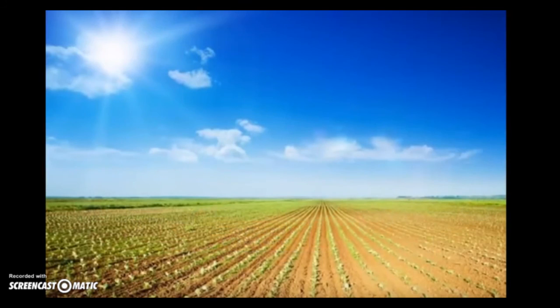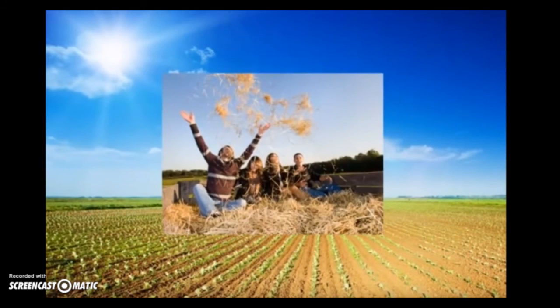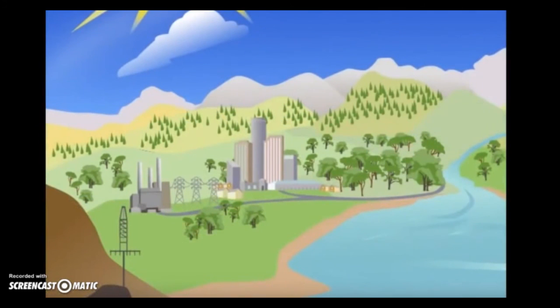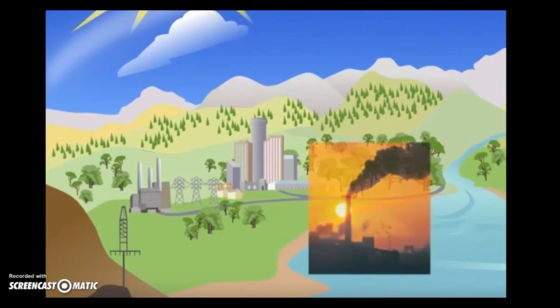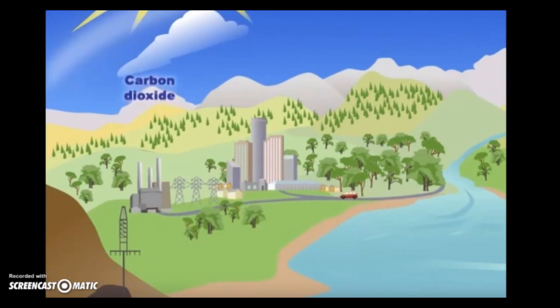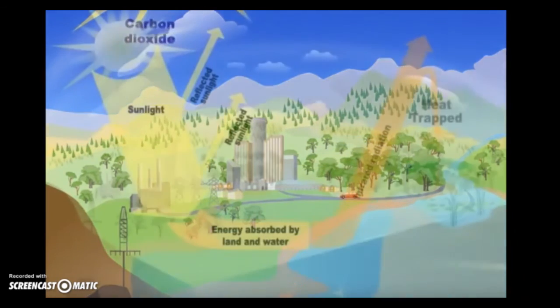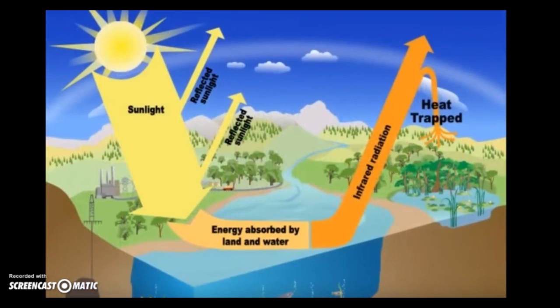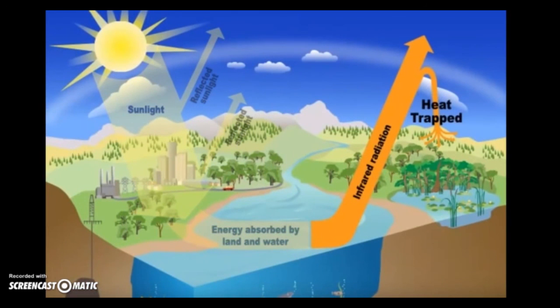We need some greenhouse gases. Without them, our planet would be too cold for plants and animals to live. But people are adding extra carbon dioxide and other greenhouse gases to the atmosphere. Whenever we drive a car, use electricity, or make a product in a factory, we use energy. A lot of this energy comes from burning fossil fuels like oil, gas, and coal, which produces carbon dioxide.